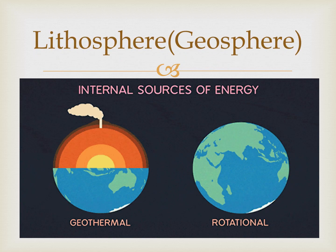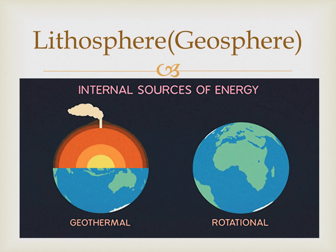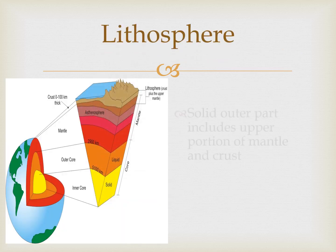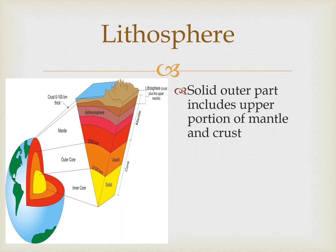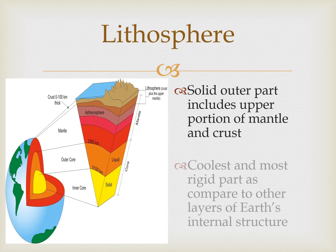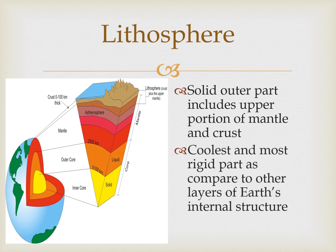The second sphere is the lithosphere, which is also called the geosphere. The lithosphere is the solid outer part that includes the upper portion of the mantle and crust. It is the coolest and most rigid part compared to the other layers of the earth's internal structure, as the temperature of the mantle and core is very high and life is not possible in those two layers.